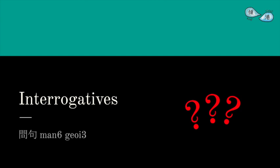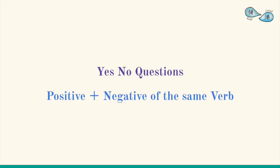Hello, everyone! Welcome to King Kong Cantonese. Today, we will talk about interrogatives. Let's start from yes-no questions. Interrogatives for yes-no questions usually consist of two parts, positive and negative.